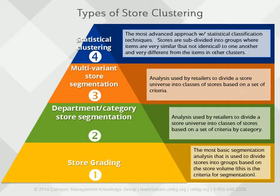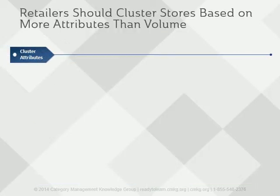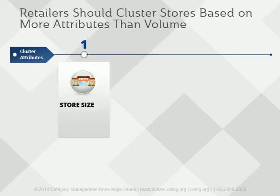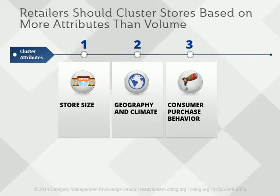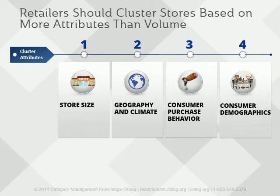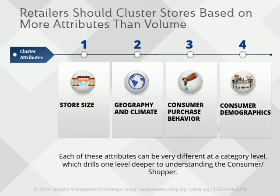Retailers should cluster their stores based on more attributes than just store volume and store size. Some attributes may be more physical — store size is a physical attribute that can influence store volume significantly, and similar geographic locations and climate conditions can also influence a variety of categories. Other attributes are based on consumer purchase behavior like loyalty and conversion. Finally, consumer demographics can also be used when store clustering — for example, based on income levels, age or ethnicity, with a focus on the most loyal or heaviest buying consumers. Each of these attributes can be significantly different at a category level, which drills one level deeper into understanding that all-important consumer.